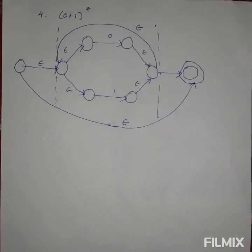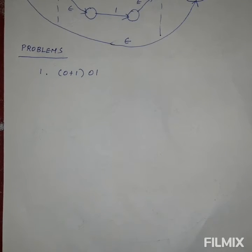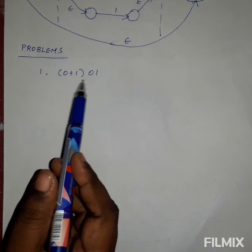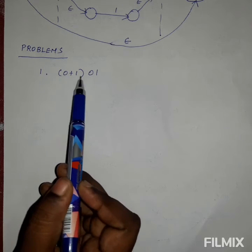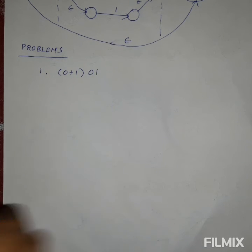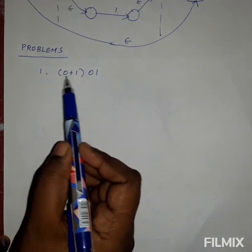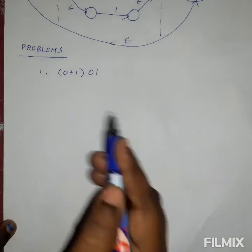Now let us see the more complex problems for epsilon-NFA. Starting with simpler problems: here there are two regular expressions — 0+1 is one regular expression, and 01 is another regular expression. While drawing the epsilon-NFA, you can draw step by step — draw each individual regular expression, and in the final step join all the individual regular expressions together. In the first step, we draw for 0+1 only.